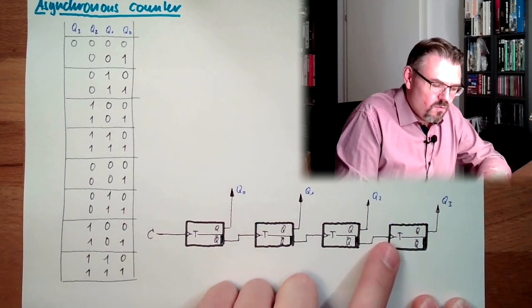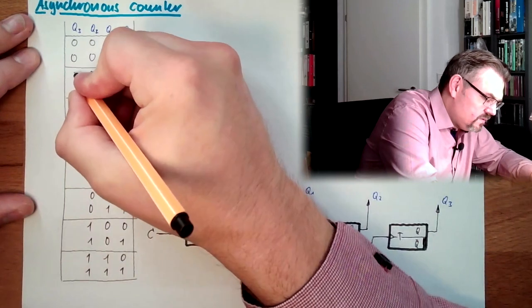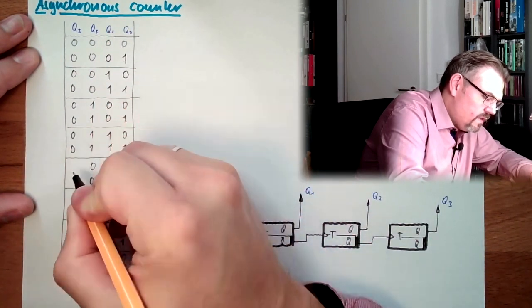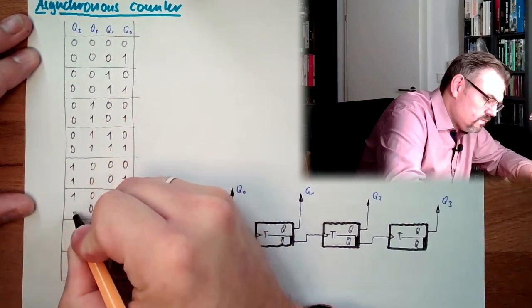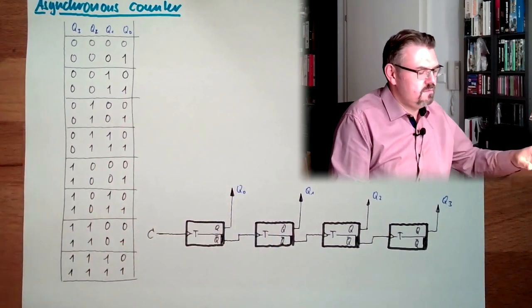Again, 1 to 0, toggle the next one. So 0, 0, 0, here, where is the 1 to 0, here, toggle. Now let's look, have a look what is happening.